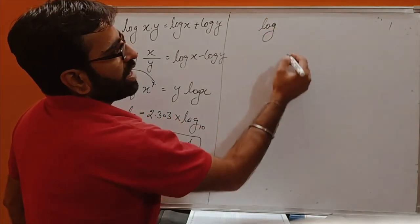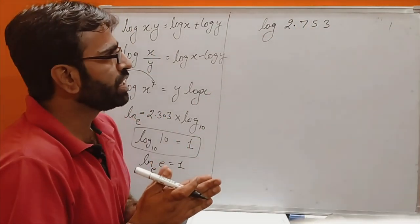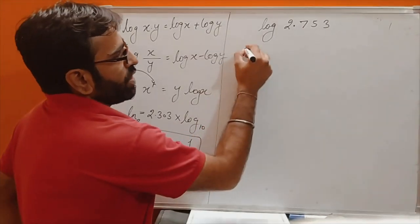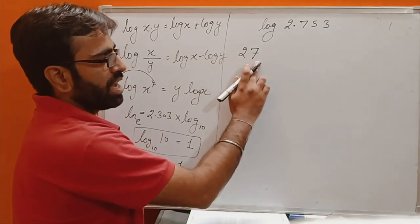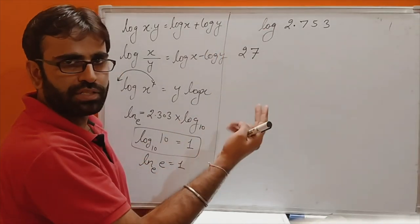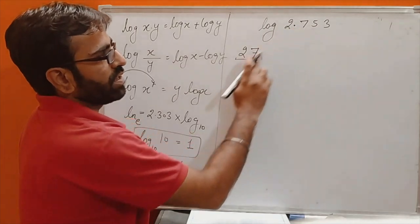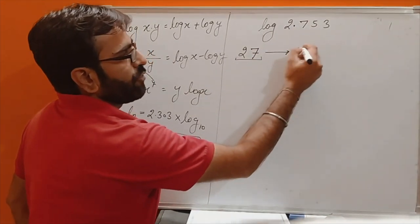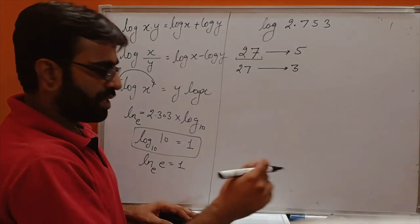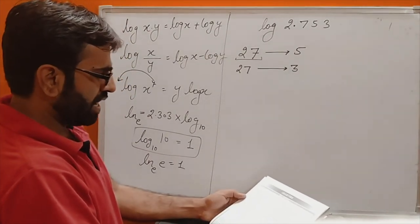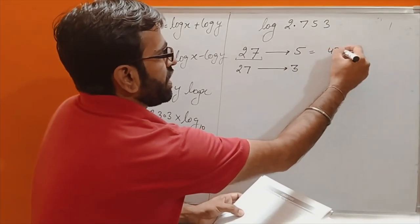Suppose we have log 2.753. We have to find its log value. We look at the starting 2 digits, which is 27. The first column of the log table has 2-digit numbers from 10 to 99, so we always look at the starting 2 digits. We look for 27 in column 5. The value of 27 in column 5 is 4393.